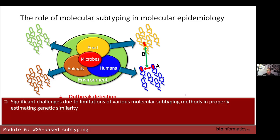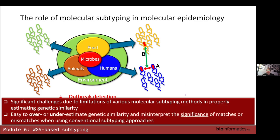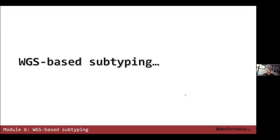In the olden days, significant challenges arose from the fact that molecular subtyping methods were better than nothing, but had a number of weaknesses — especially in terms of estimating genetic similarities. With many molecular subtyping methods it was very easy to either overestimate or underestimate genetic similarity, so using molecular subtyping data alone could be quite problematic. Now in terms of WGS-based subtyping, things have changed considerably.